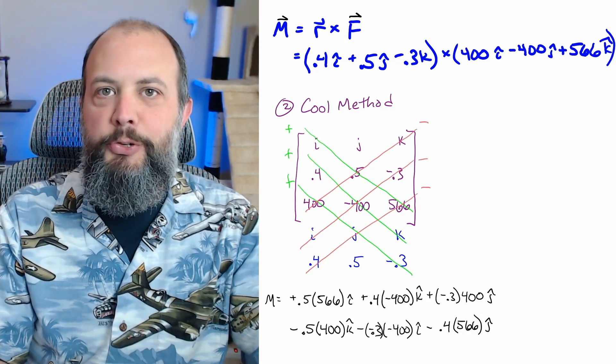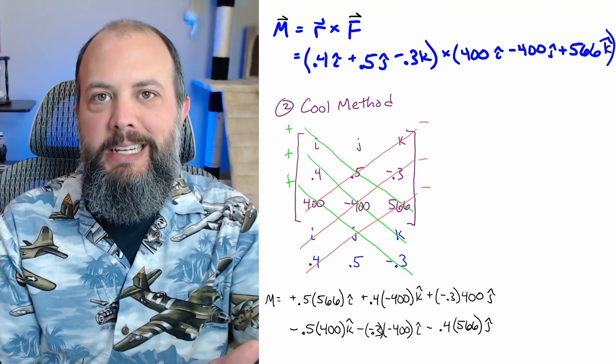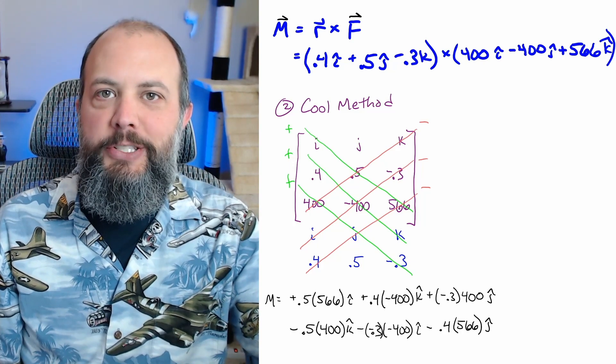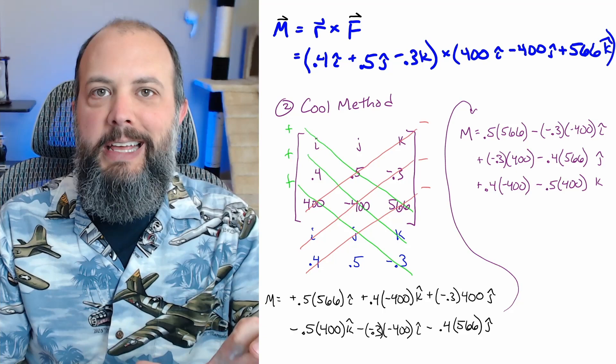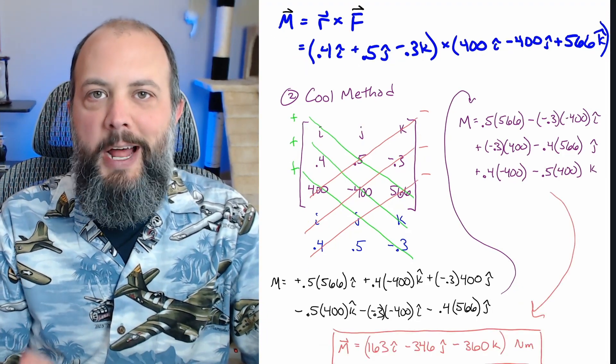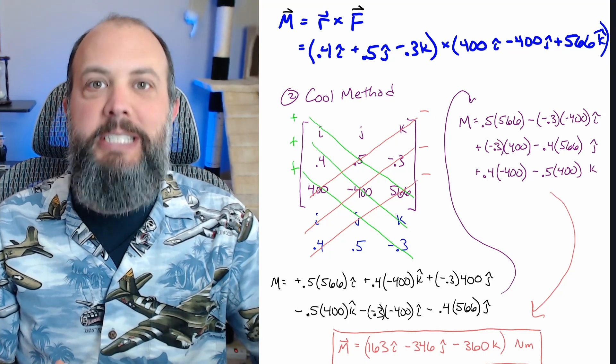So I wrote out the term here in two rows just to make it easier to see that the first three terms along the green diagonals are all added and the second three terms along the red diagonals are all subtracted. Then I group the two rows together by i, j and k terms. And written down here at the bottom of the screen, you can see you end up with the exact same answer as using the lame textbook method.